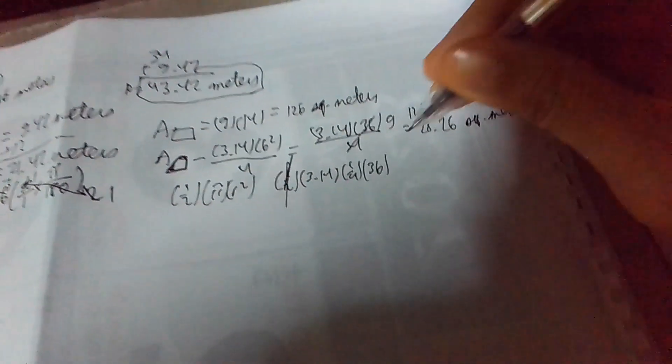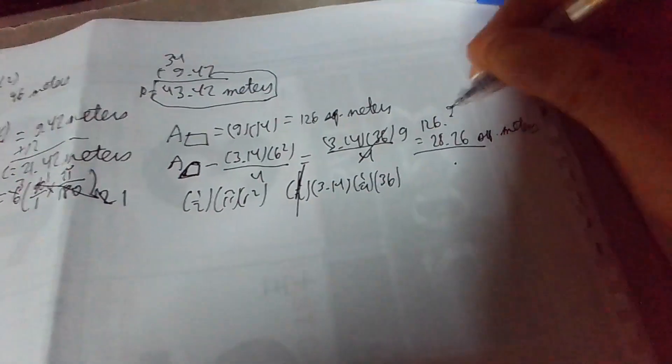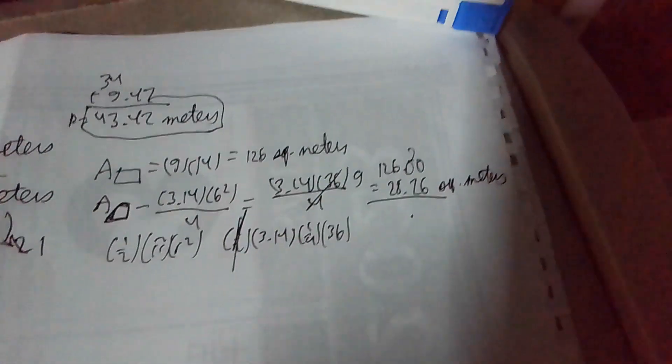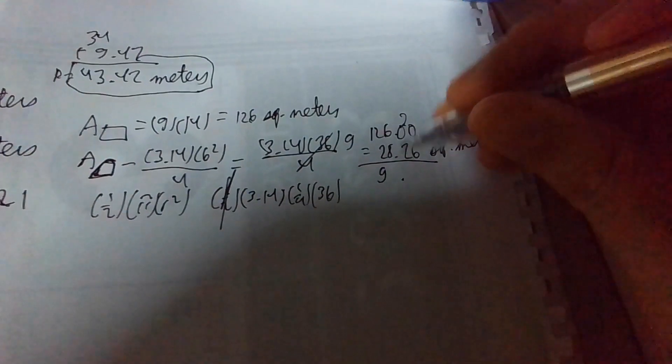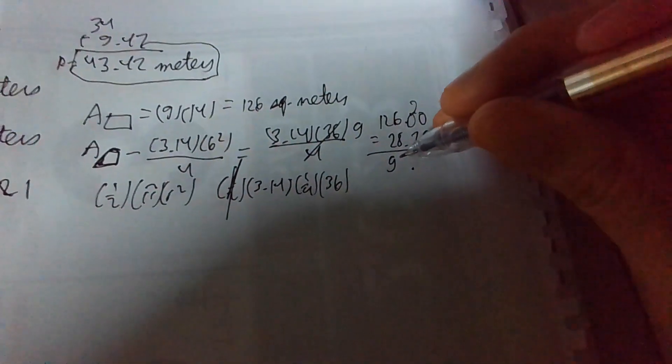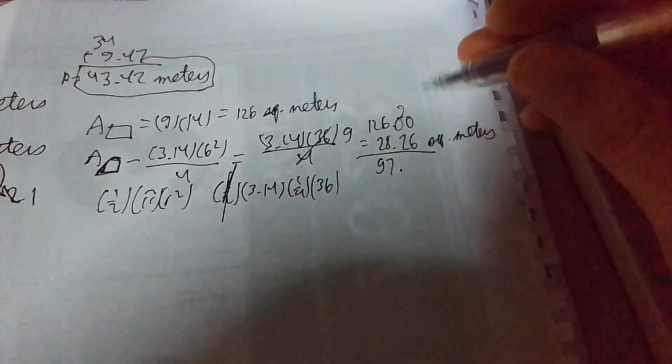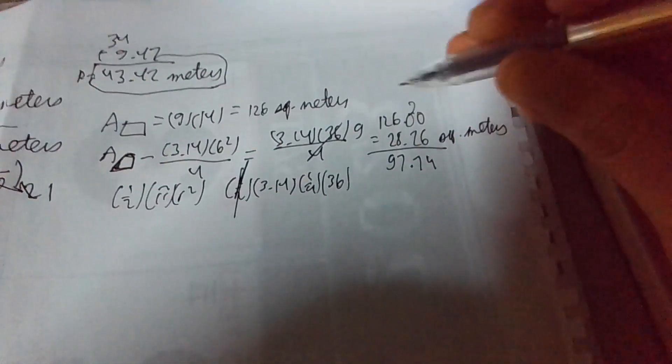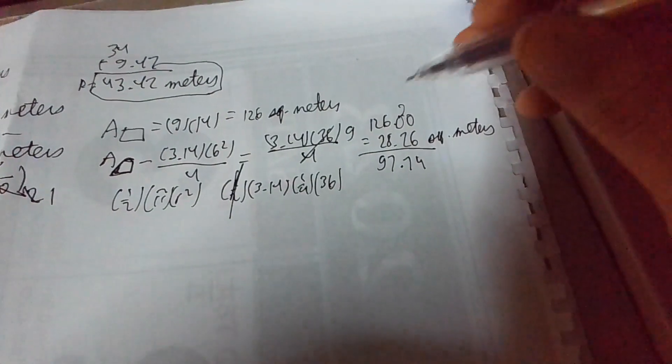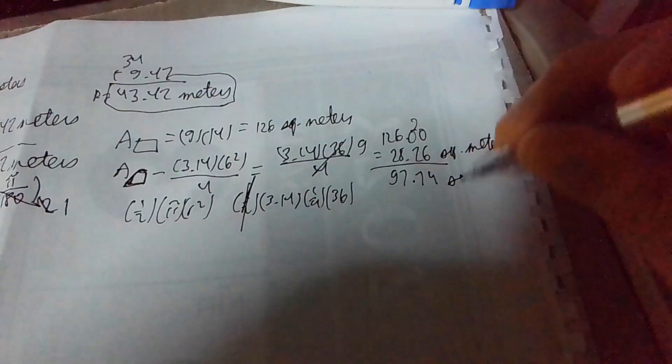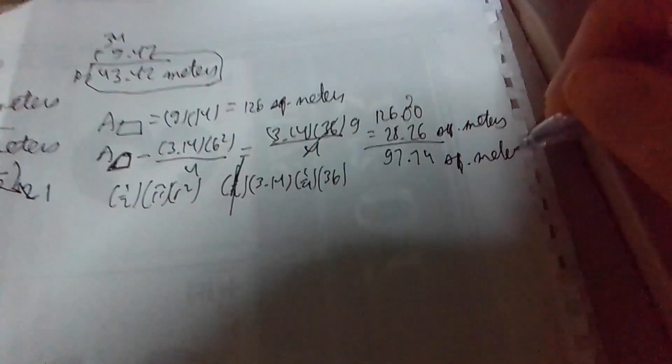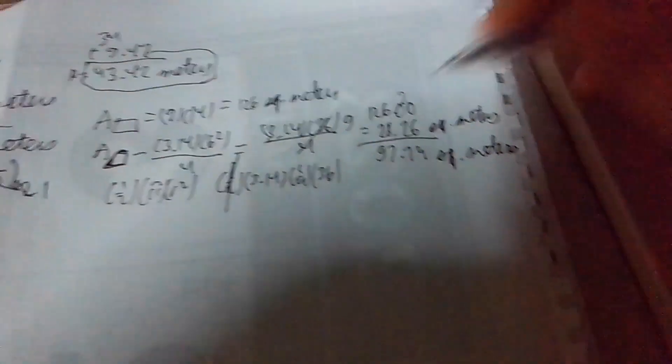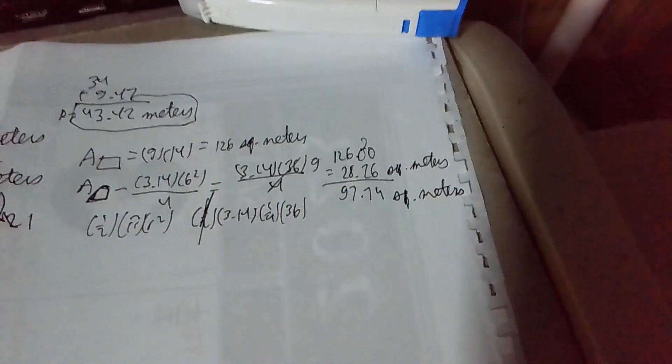Now, we have 126 minus this guy. If I were to do mental math, 10 minus 6 is 4, this becomes 9, 74. 15 minus 8 is 7, and then 11. The remnant area of the figure should be 97.74 square meters.